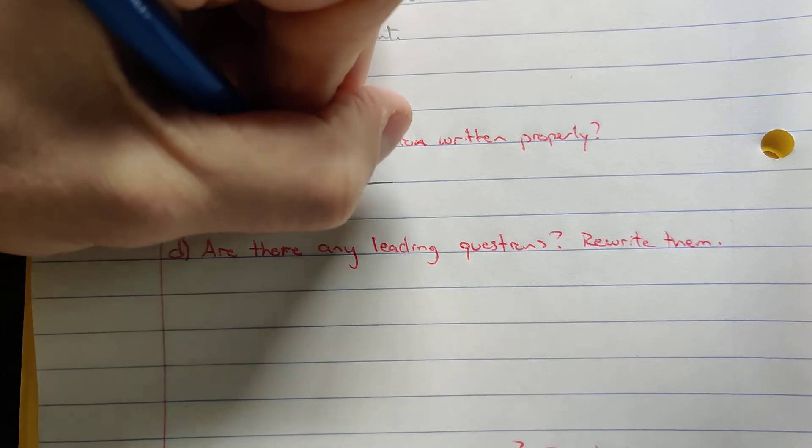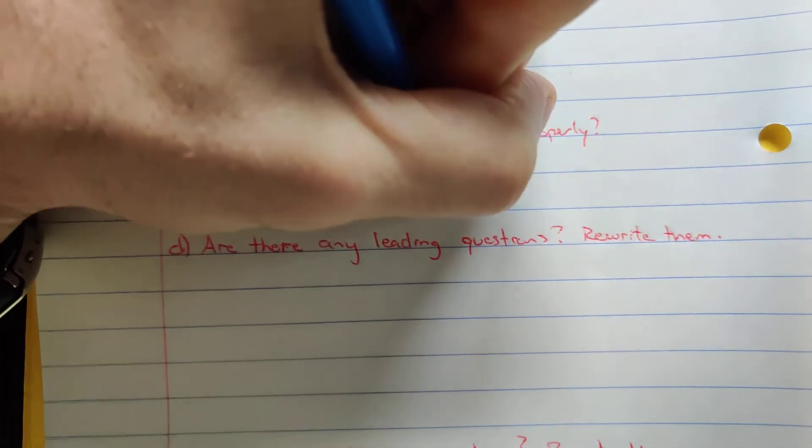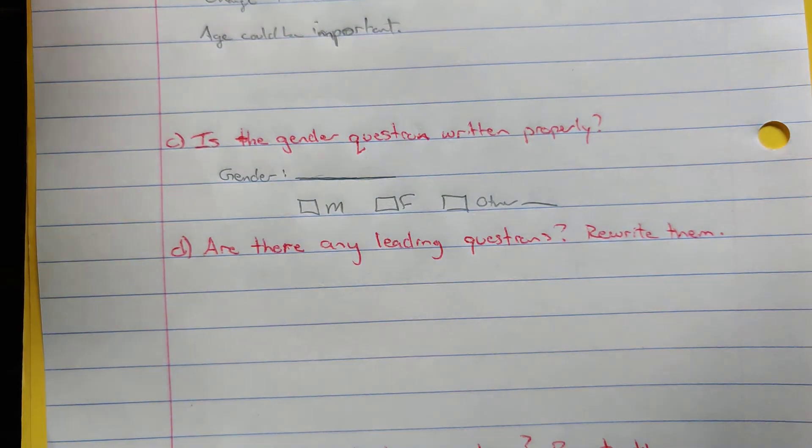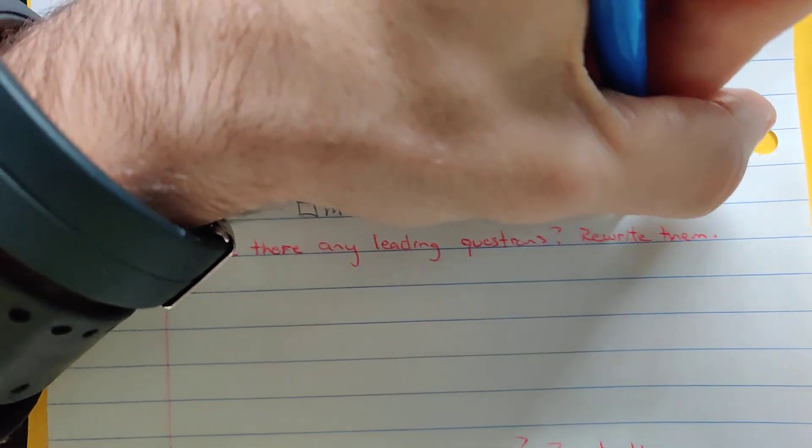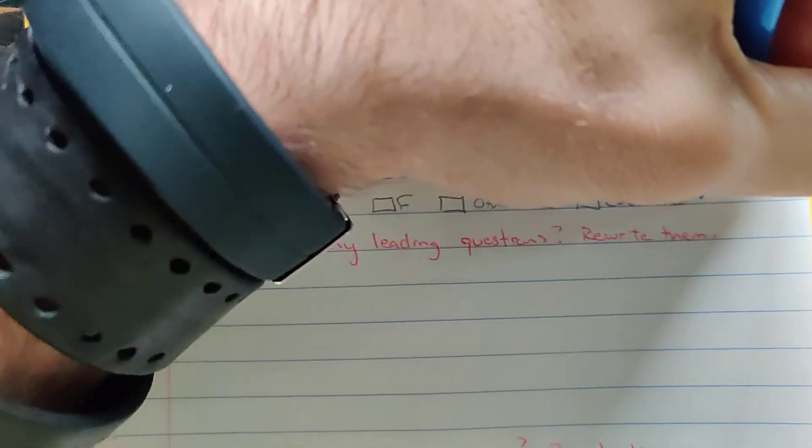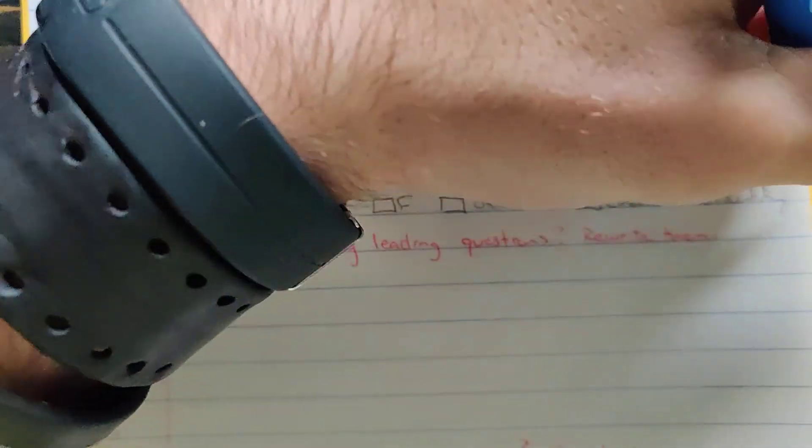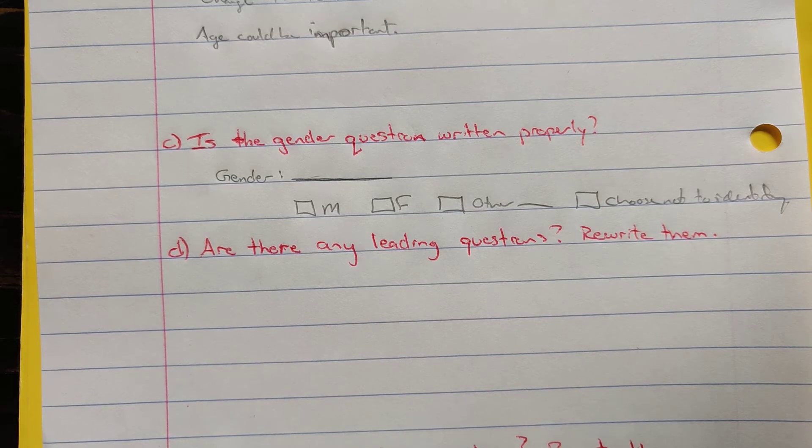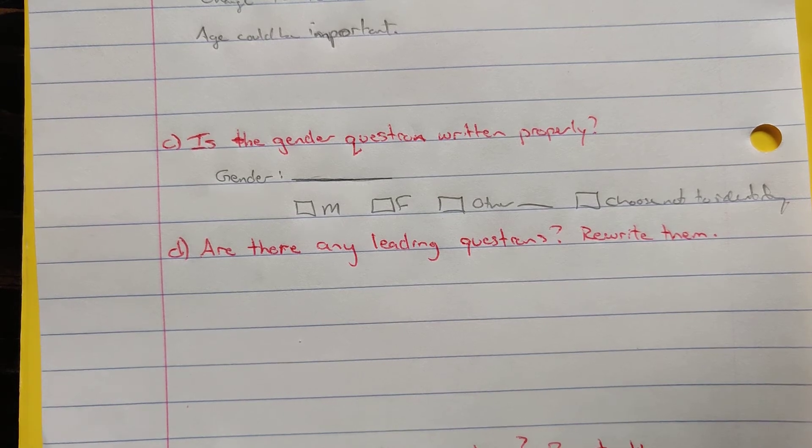So another option is to do your check boxes. So you have male, you can have female, but then you could also have something like other, or you could have choose not to identify, variety of options there. But this gender question now does need to be thought about when you are writing a survey. Do you need it? And then how can you effectively do it so that you will not upset someone who feels that their gender is not binary like male or female.